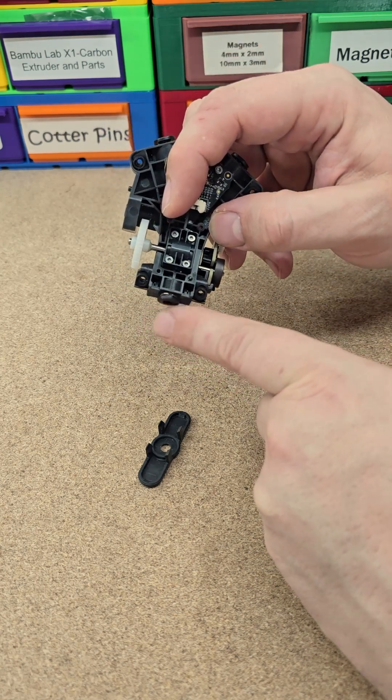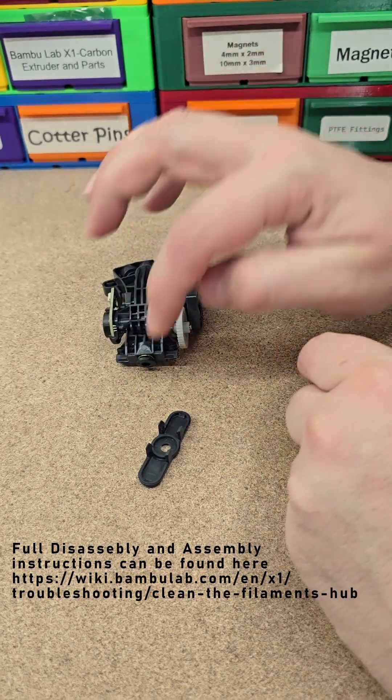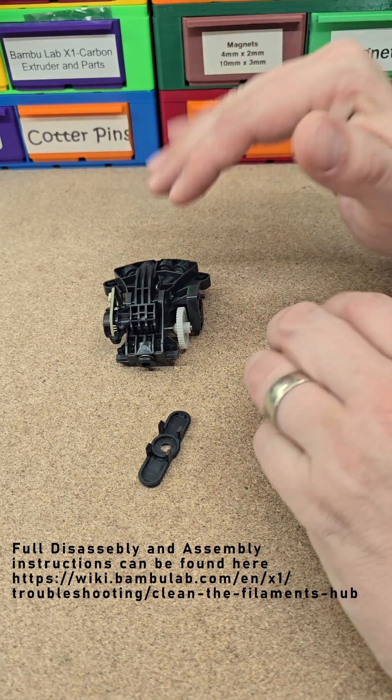You can just replace these guys right here by removing these six screws. Be careful, they'll just fall out, and there's some magnets in there that you want to make sure to flip the correct way when you put it back together.